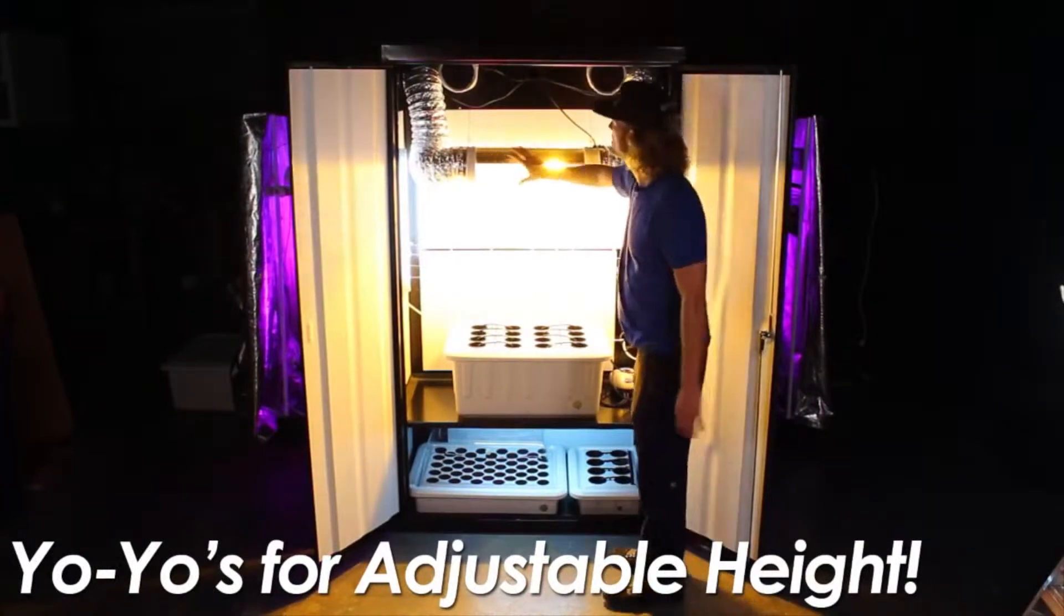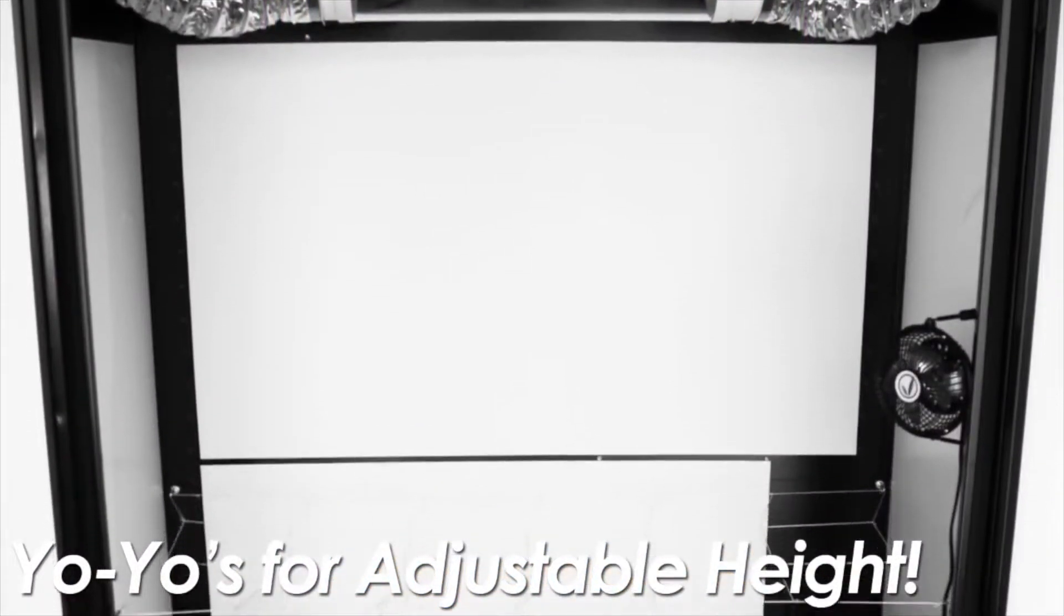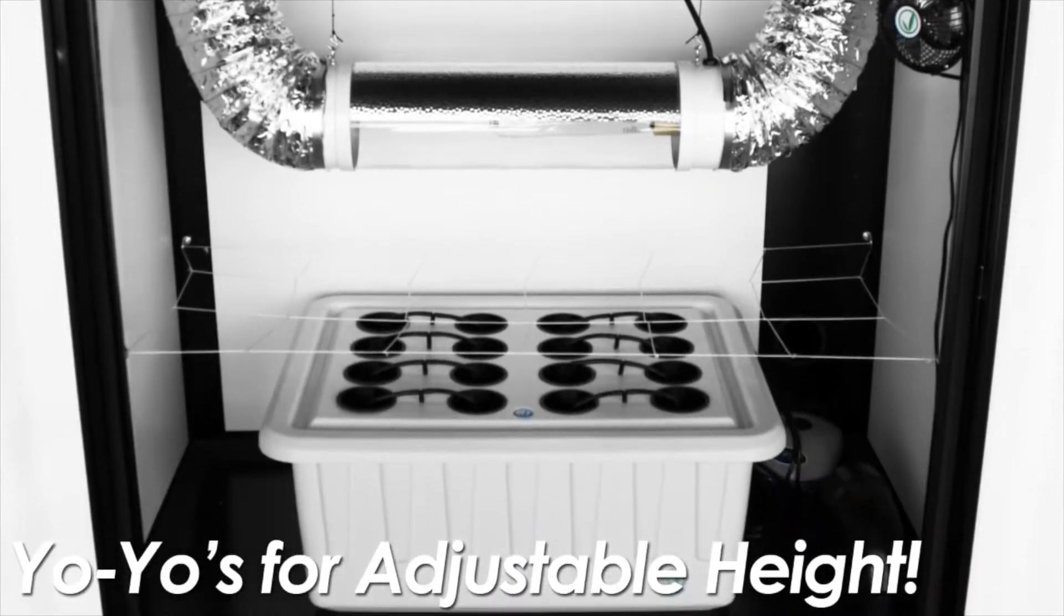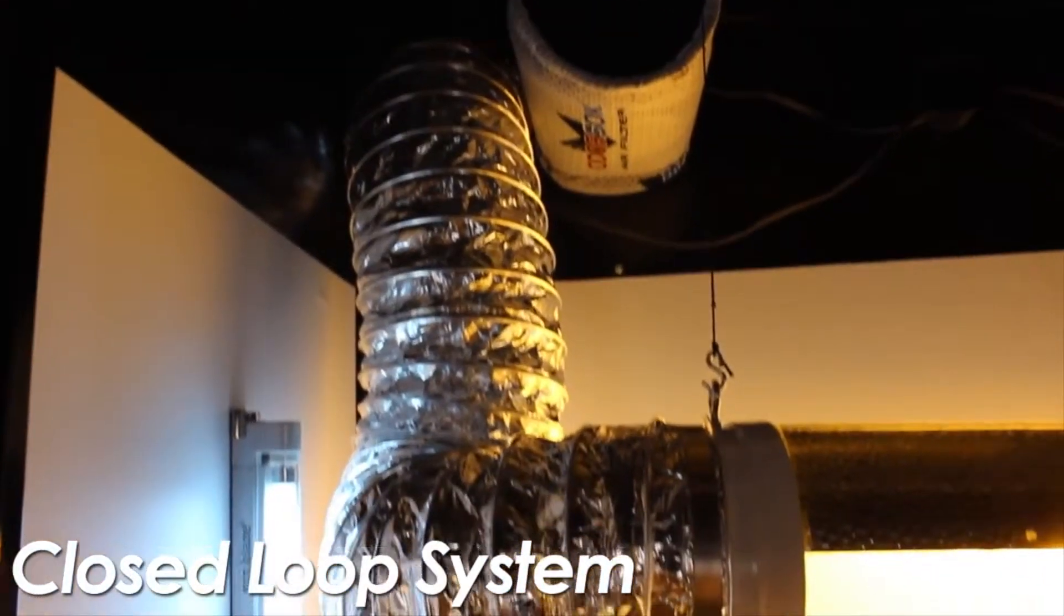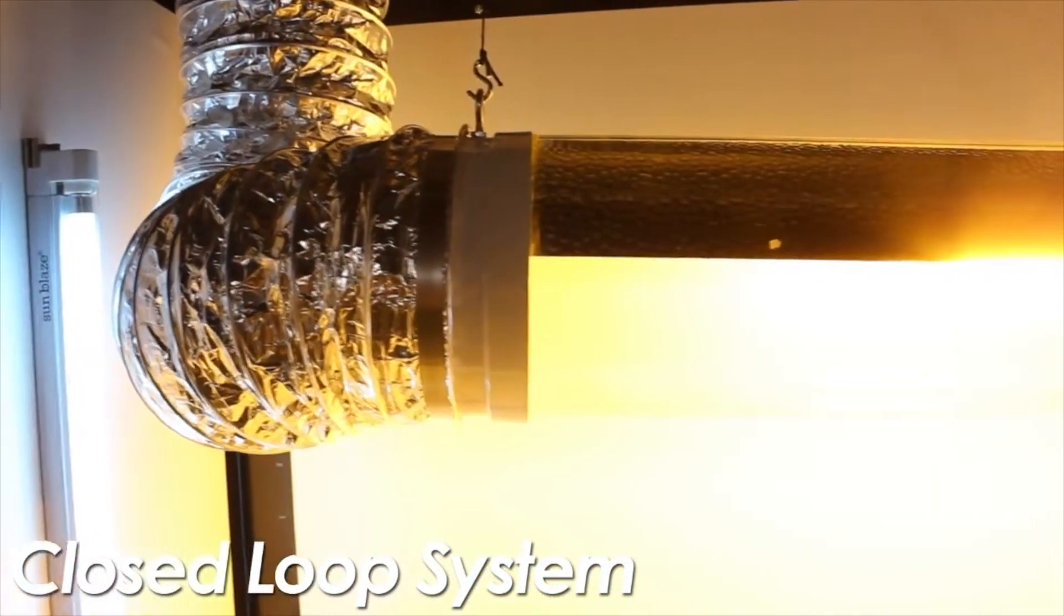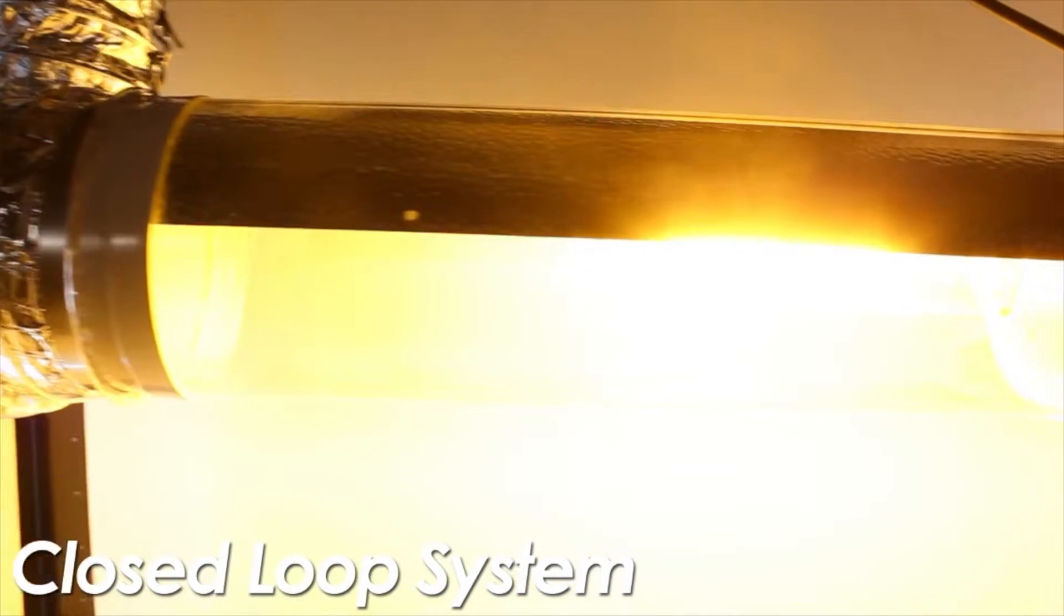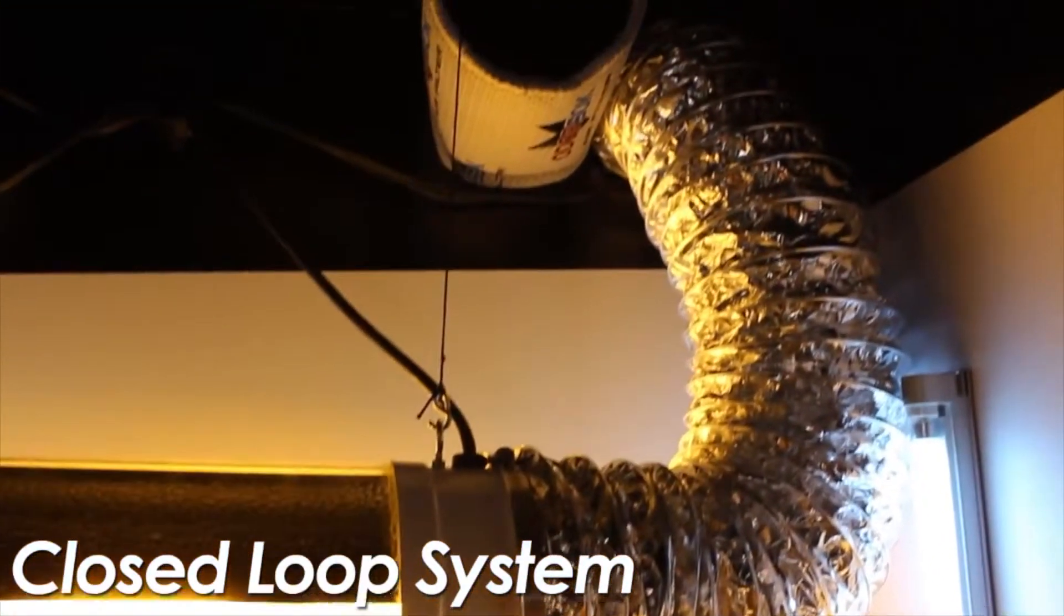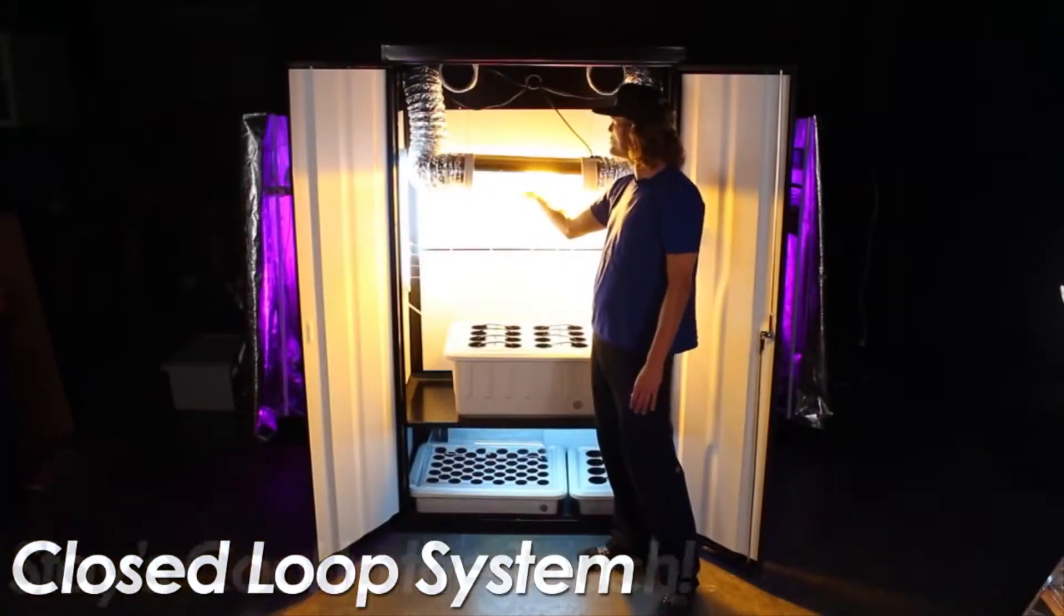This super cool lighting is on a yo-yo so you can raise and lower your lights to have your canopy come right up to it. There's two fans that blow through this cool tube, which is very important for all Supercloset systems. Two fans blowing just through the tube means it's cool to the touch.